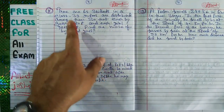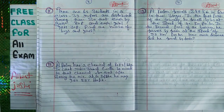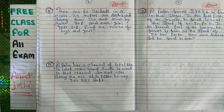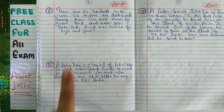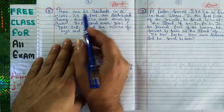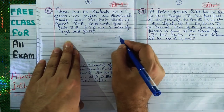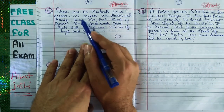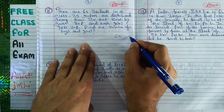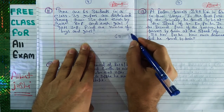There are 65 students in a class. 39 rupees are distributed among them so that each boy gets 80 paisa and each girl gets 30 paisa. Find the number of boys and girls. This is a very interesting question that has come in your exam. There are a total of 65 students and you have 39 rupees to distribute.